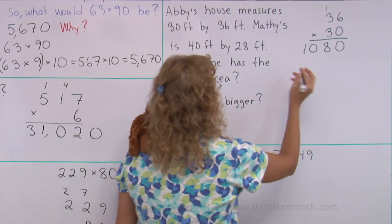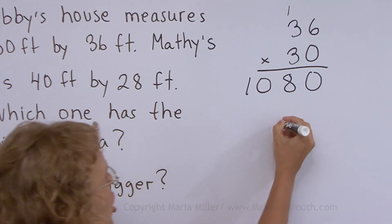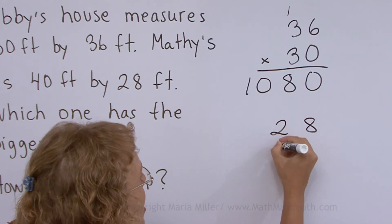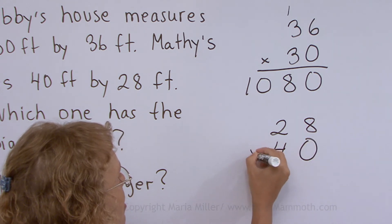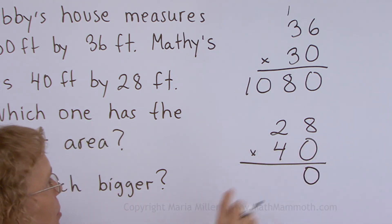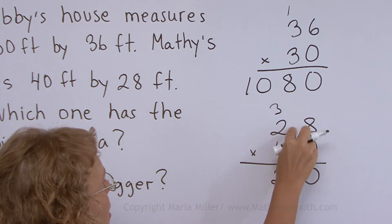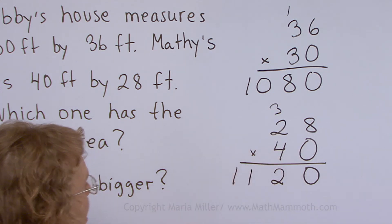Then the other one. 40 times 28. But I will write 28 on top and 40 under. So I can use my little trick. 0 here, so I just put 0. And then multiply 4 times that. 4 times 8, 32. And then this is 8 plus 3, 11.